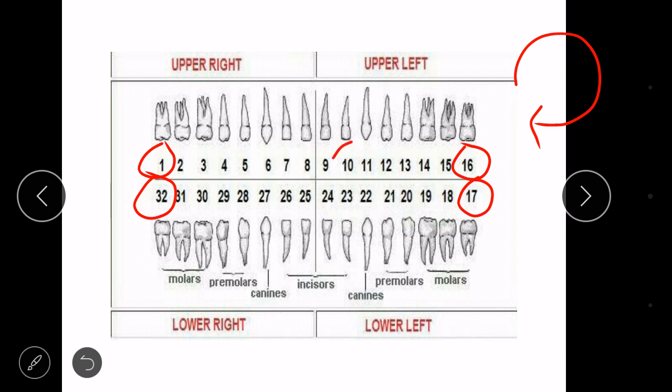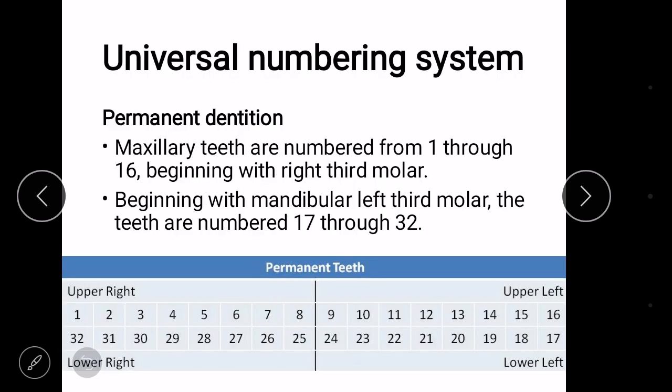So if we take tooth number 10, we know that we are talking about permanent maxillary left lateral incisor. But what if this table is not here with us and we have to do this mentally? Let's take the number 24. We have to do a lot of mental calculation and draw this quadrant in our head and realize it would take time to realize that 24 comes over here and represents central incisor.